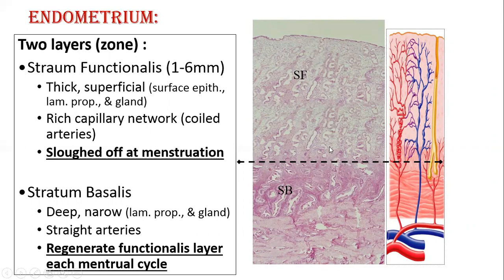The stratum functionalis is thick and superficial, towards the lumen; it contains uterine glands, lamina propria, and a rich capillary network. This is the part that gets sloughed off at the time of menstruation — days one to four. The stratum basalis is deep, narrow, and contains more straight arteries. The basalis regenerates the functionalis layer after each menstruation, while the stratum functionalis is the part that gets sloughed off.